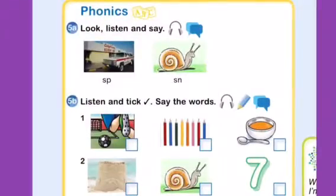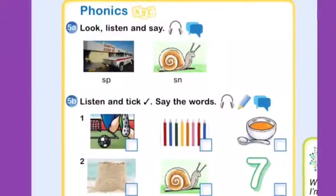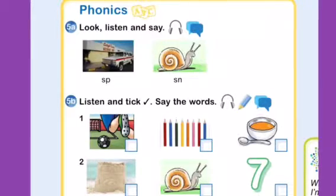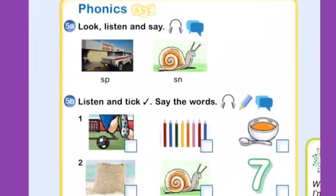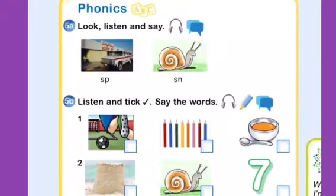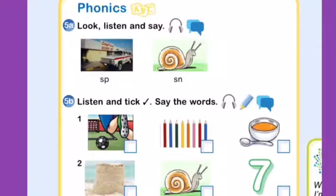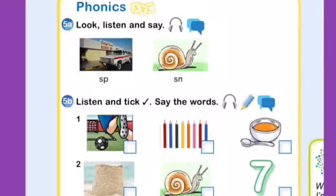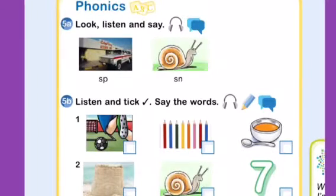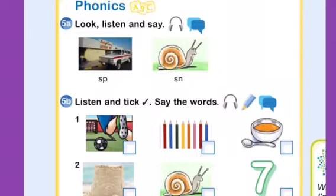The last part of Unit 5 is phonics. We're going to learn two new sounds: 'sp' and 'sn'. For example, number one: hospital — 'sp', 'sp', hospital. Number two, the second picture: 'sn', 'sn', snail.